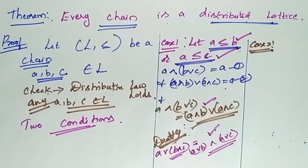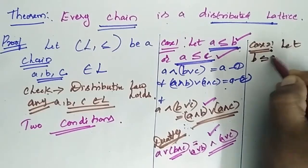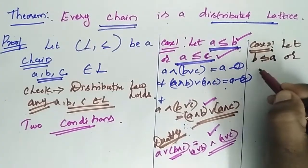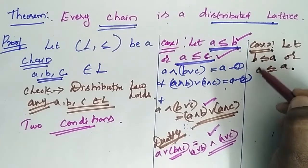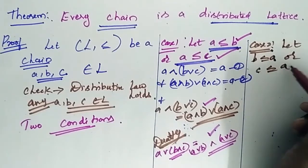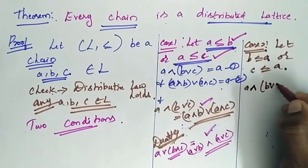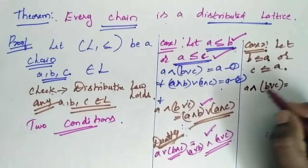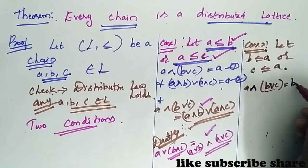In Case 2, we consider let b is less than a or c is less than a. Since b and c are less than a, when we go for considering the first condition, a meet b join c is equal to b.